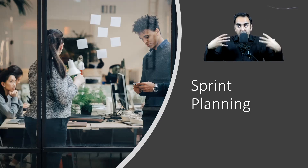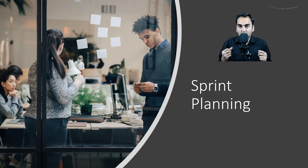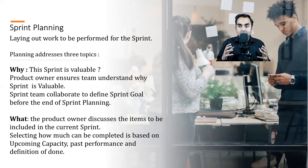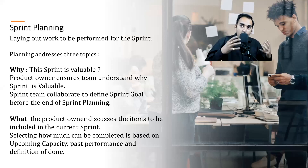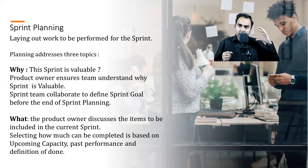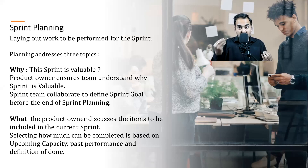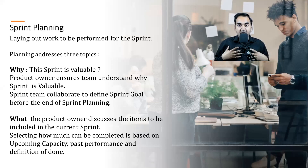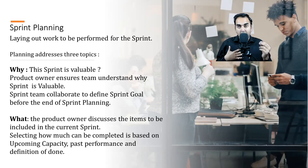As a team member of a scrum team, there are three things an individual needs to know about sprint planning: number one, why certain things need to be done; number two, what needs to be done; and number three, how. The first — why — is the overall reason the sprint needs to be done. This question comes from developers and needs to be answered by the product owner.